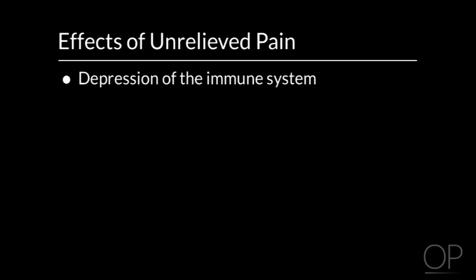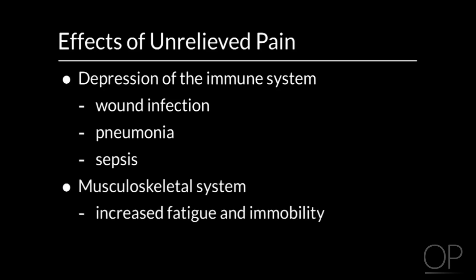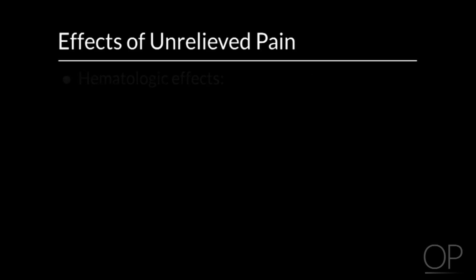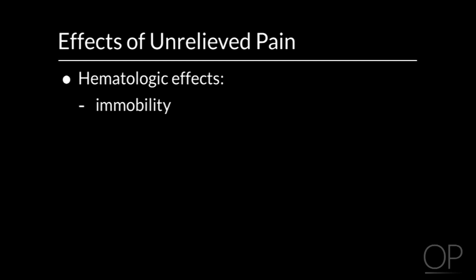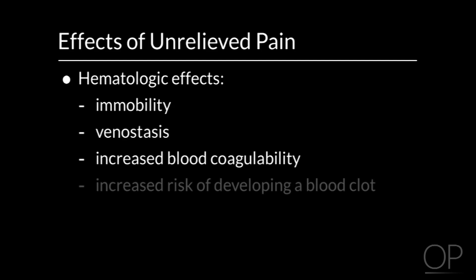Depression of the immune system can also be caused by unrelieved pain. This may predispose the patient to wound infection and pneumonia. The musculoskeletal system is affected by increased fatigue and immobility as a result of unrelieved pain. Impaired muscle function and muscle pain can lead to immobility, causing venostasis, increased blood coagulability, and increased risk of developing a blood clot.